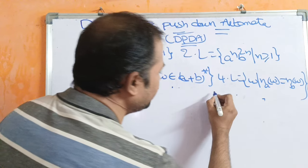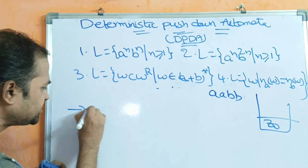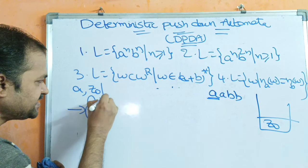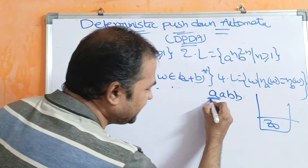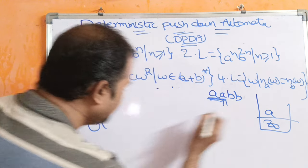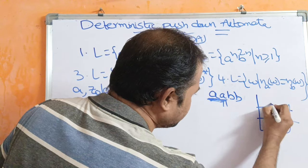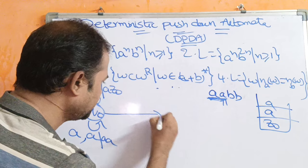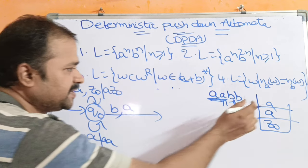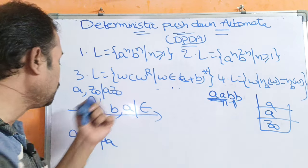Let us design the PDA for the first example. Let the string be AABB and the stack is empty. Currently we are at state Q0. If the input symbol is A and the stack is empty, we push A onto the stack. Next, if the input symbol is A and the stack's topmost symbol is A, we push this A onto the stack as well, remaining at Q0. Next, if the input symbol is B and the stack's topmost symbol is A, we perform the POP operation. On reading the first B, we move from Q0 to Q1.